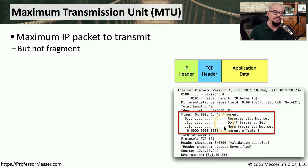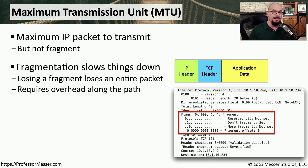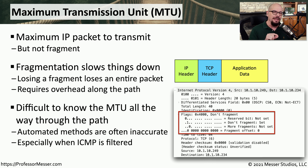We determine the maximum size that you're able to send using something called a Maximum Transmission Unit, or MTU. This designates the size of the data we're able to send through the network without having to fragment any of that information further. The reason we don't want to fragment is that it commonly slows down the overall flow of traffic. If you can optimize your network communication so that you're not fragmenting, you'll have a much higher throughput. This also eliminates any overhead of having to chop the data into smaller pieces, send those individual pieces across the network, and then rebuild those pieces when they get to the other side.